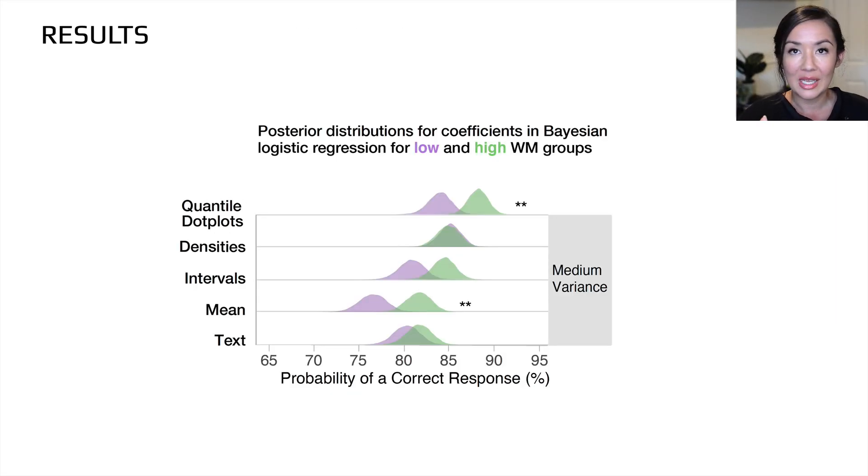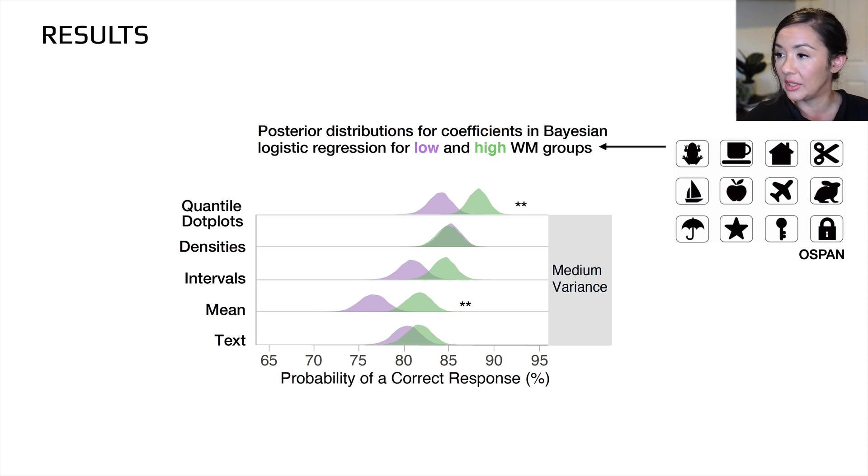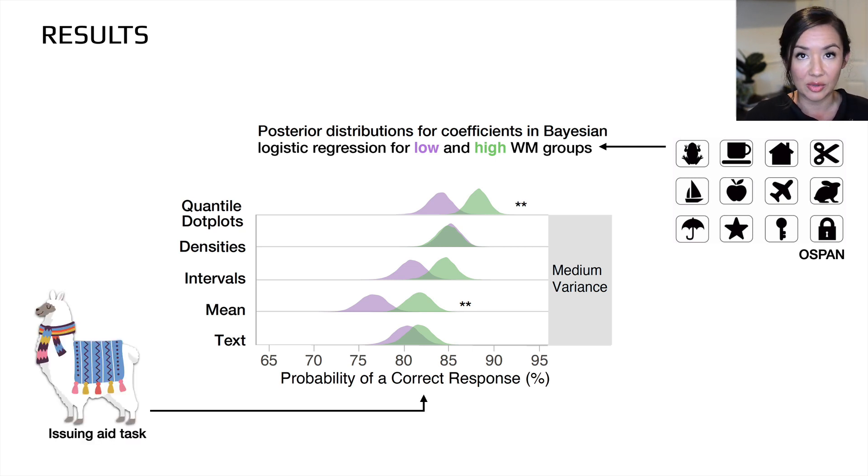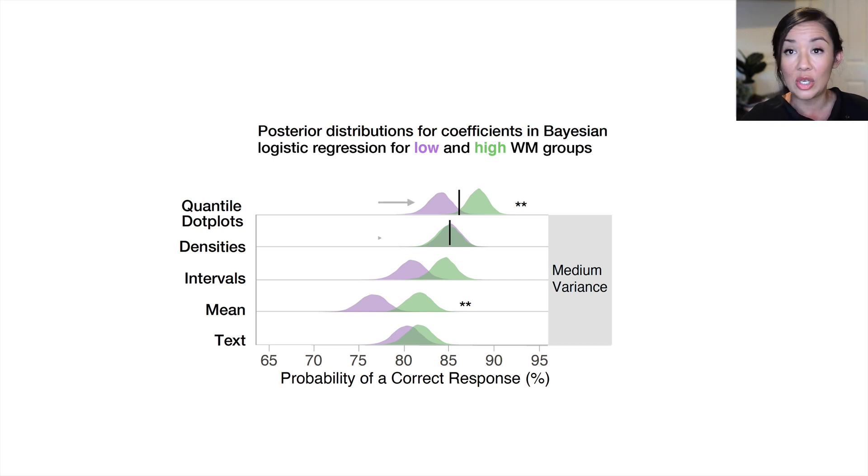That brings us to the results. We used Bayesian multi-level logistic regression models to calculate the statistics from our findings. The first thing to note is that we have two different groups. Low as in purple and high as in green, and those were derived from the O-SPAN scores. Down here on the X, we have the probability of a correct response, which is in the ALPACA task. How effectively did people issue blankets or withhold blankets based on the correct answer or the optimal strategy that we've previously calculated? The first thing I want to point out is that quantile dot plots and densities had the best performance when you collapse across high and low working memory groups. We're really seeing that these two visualization techniques, the two distributional visualization techniques, are the ones evoking the best performance compared to the summary techniques.